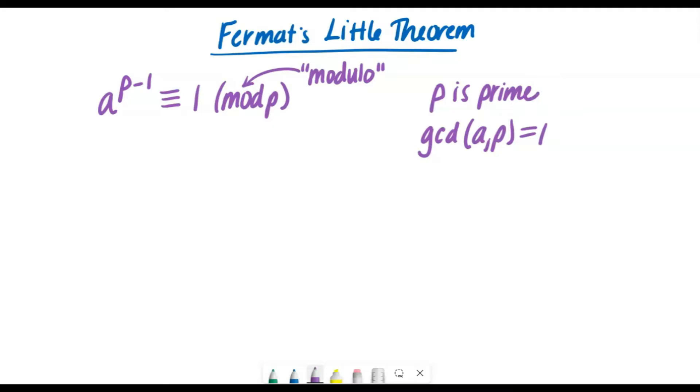So let's take a look at an example first where we can do the arithmetic in our head. For example, let's say I wanted to work with the prime number five and let's have an a value of two.